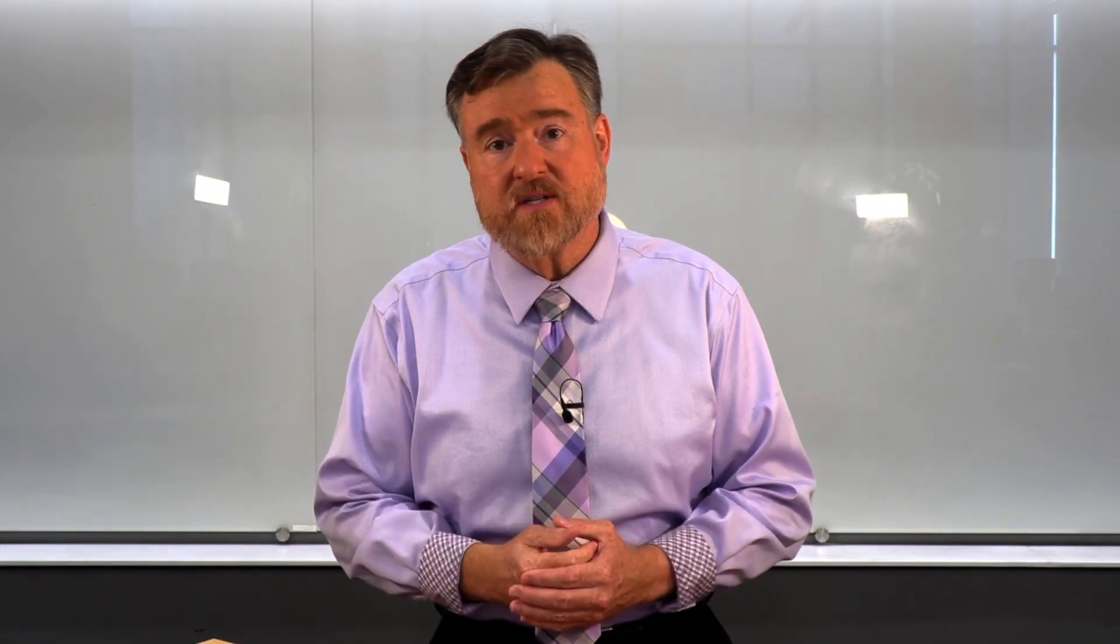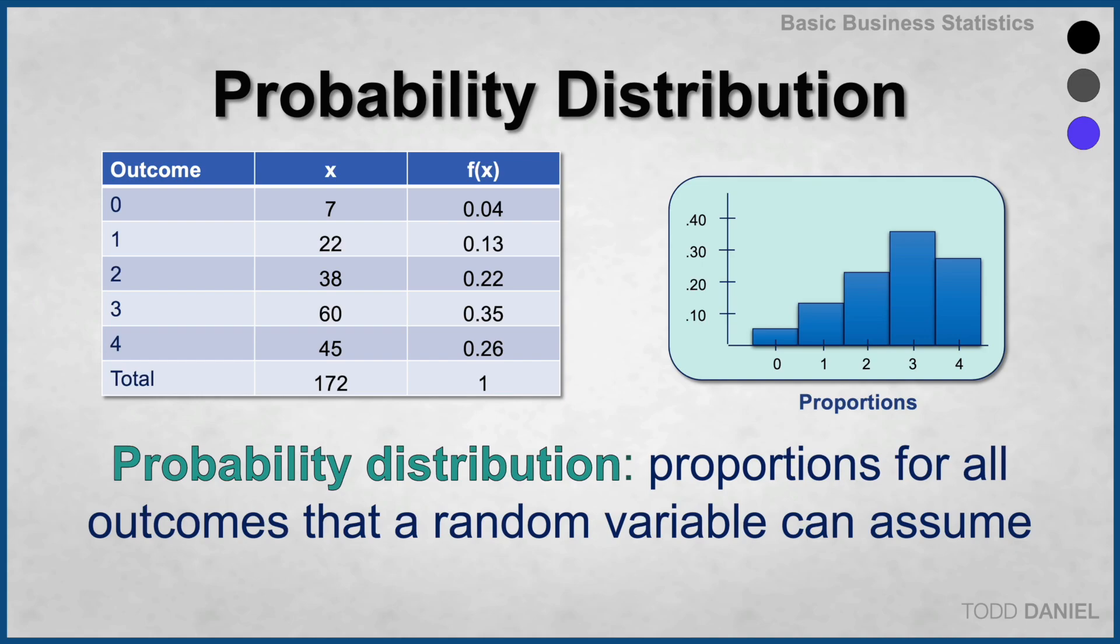A probability distribution starts with a frequency distribution and then tells us the proportion for all outcomes that a random variable can assume. Again, you see the outcomes and the X values are the same as they were previously, but now we have divided each X by the total of 172, giving us proportions which can act as probabilities.